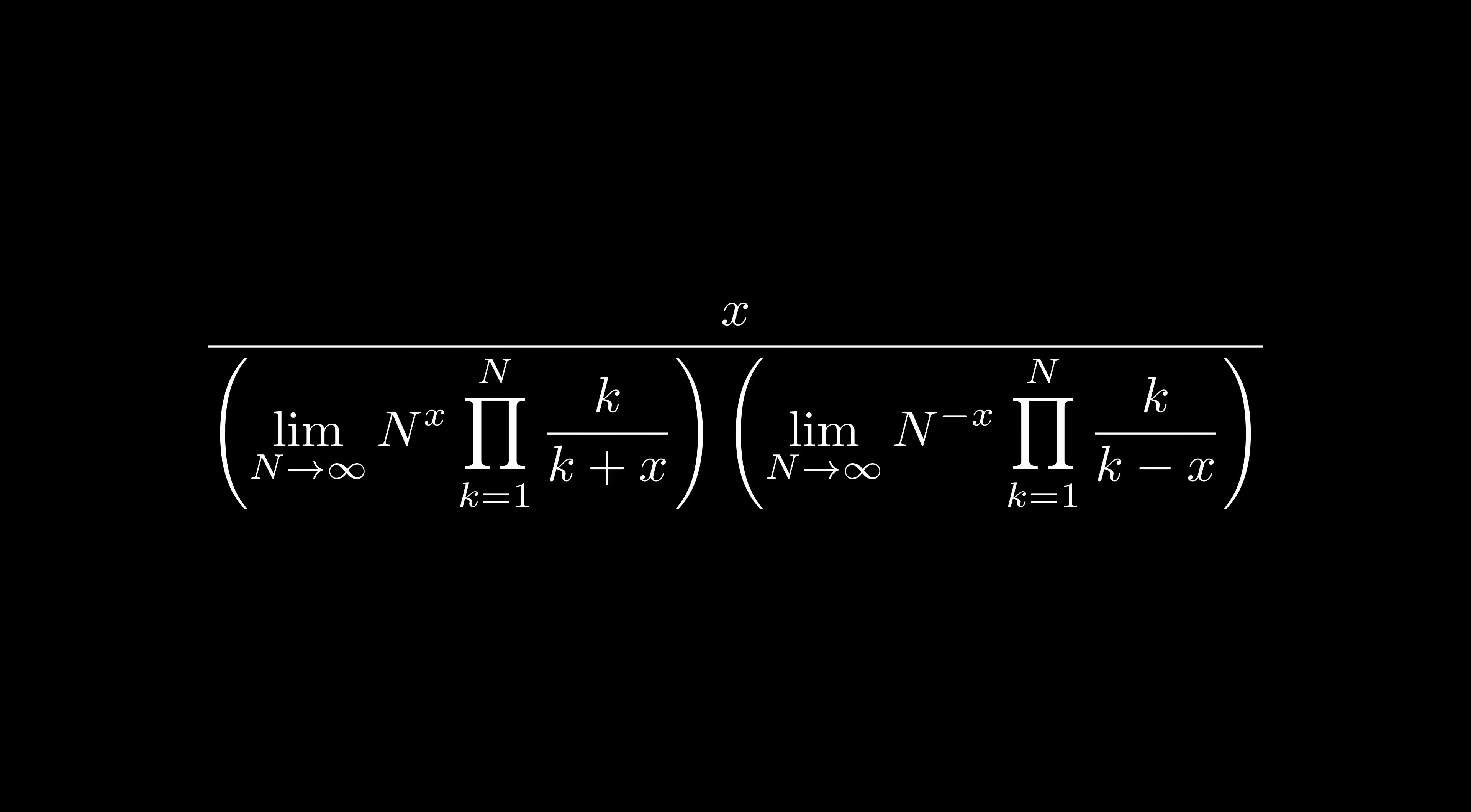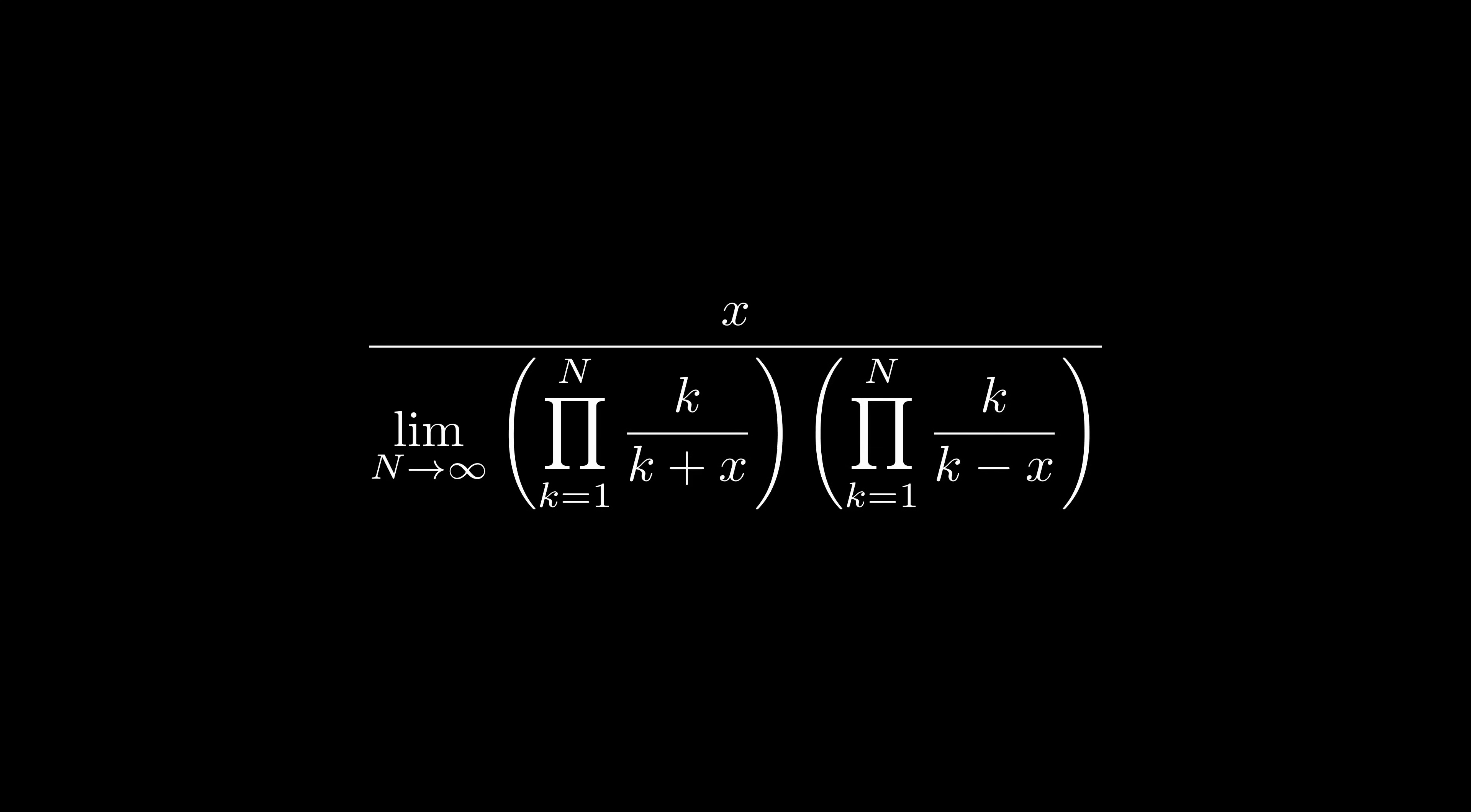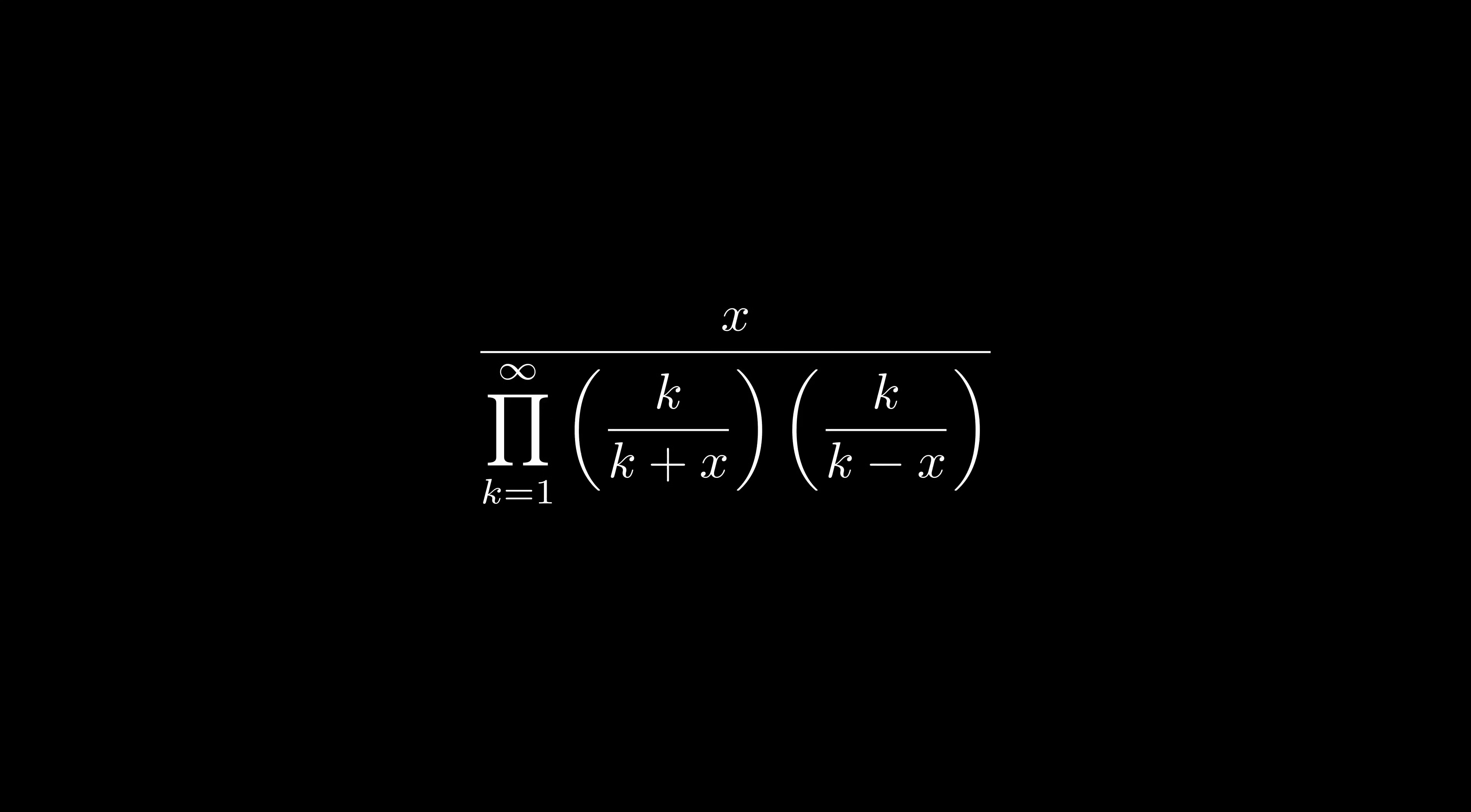Next, since both limits exist, we can just use a single limit, and now we can pull out the n to the x and n to the minus x, which cancel each other out. Now, when we multiply two products, we can just combine what's inside, and since the only instance of n is in the top of the product now, we can use the infinite product shorthand.